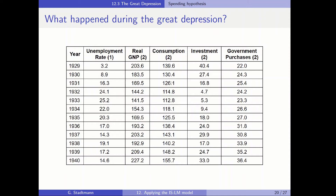Consumption also decreased, but when you compare the development of consumption with the development of investment, you can see from this column that investment reacted very, very much. Investment from 1929 to 1932 dropped by almost 90% — a tremendous drop in investment, which is of course a goods market shock. Government purchases were pretty stable in the time period 1930-32, so not too much was going on with respect to government spending.